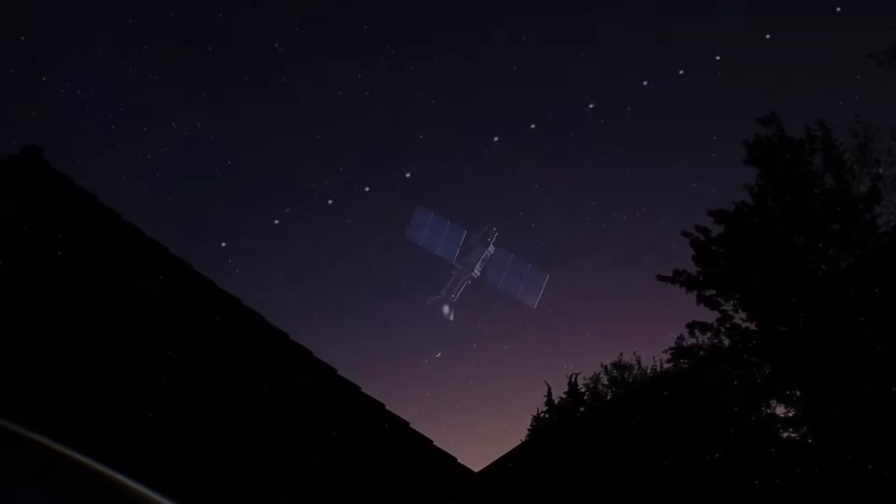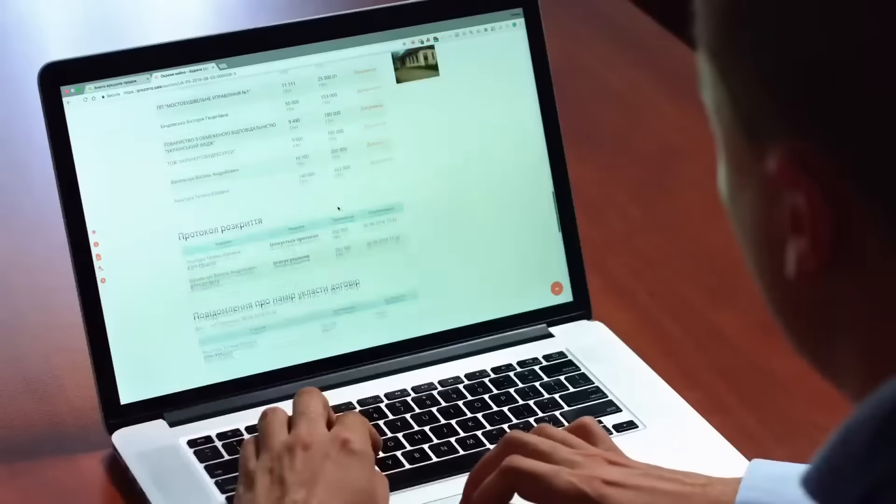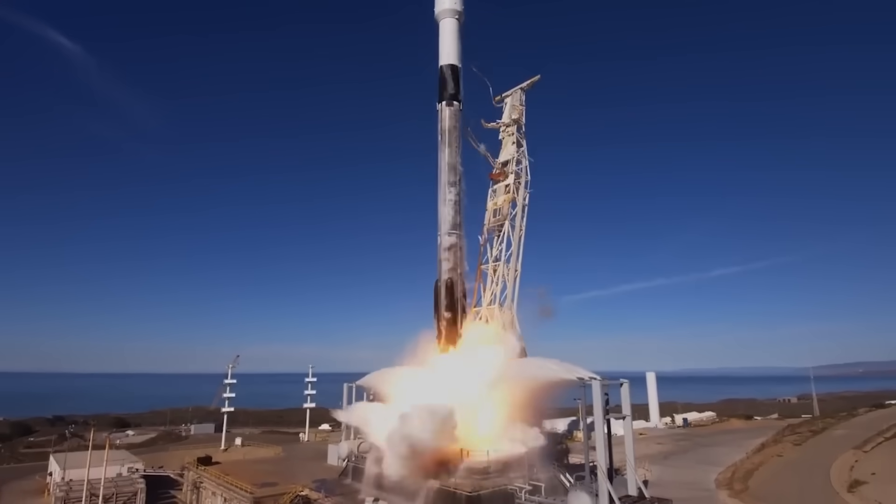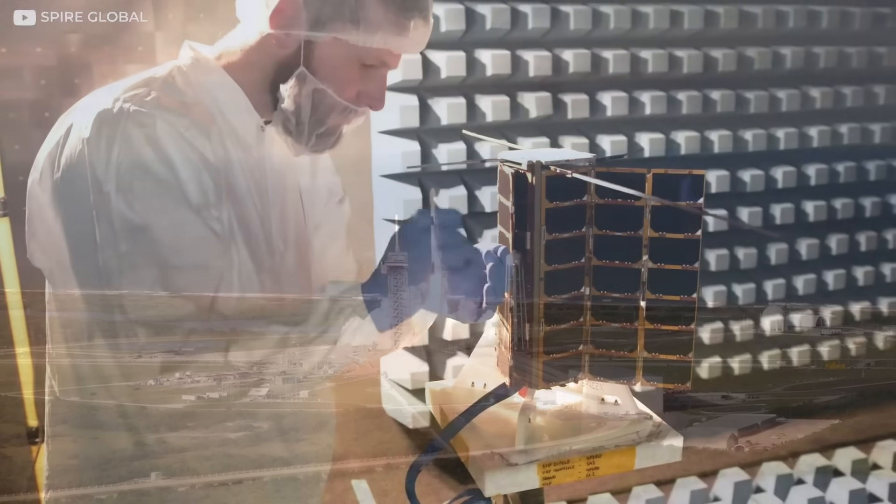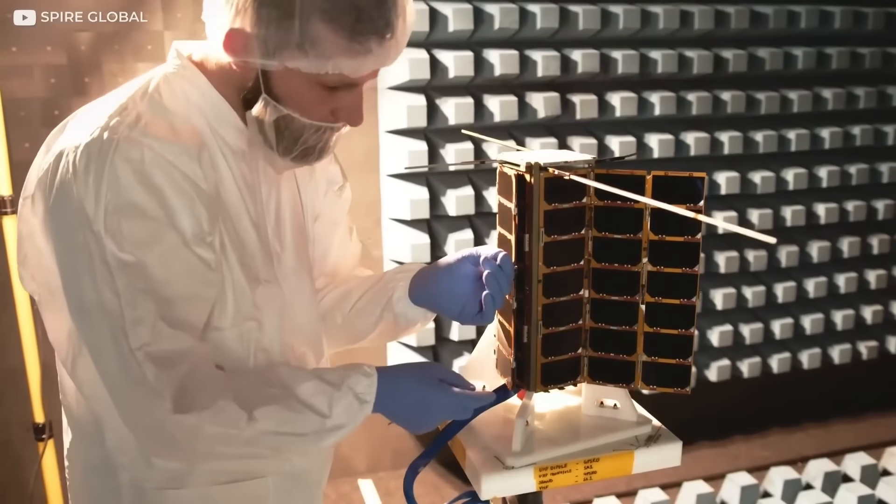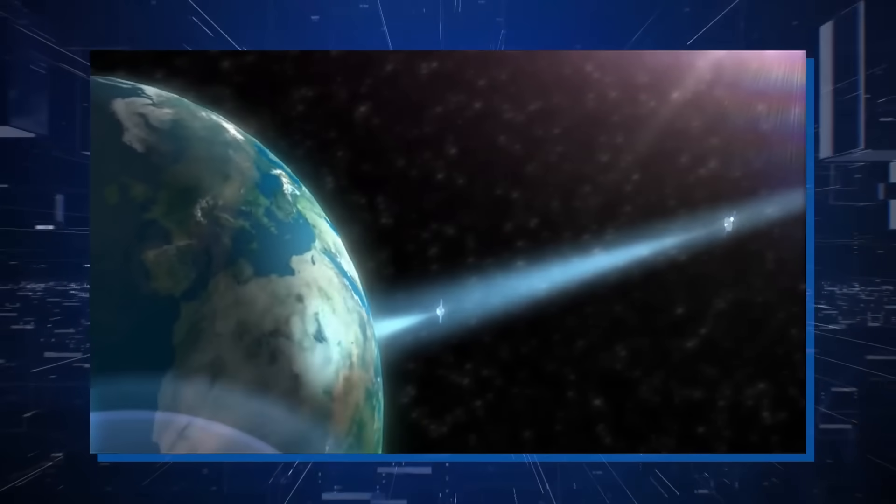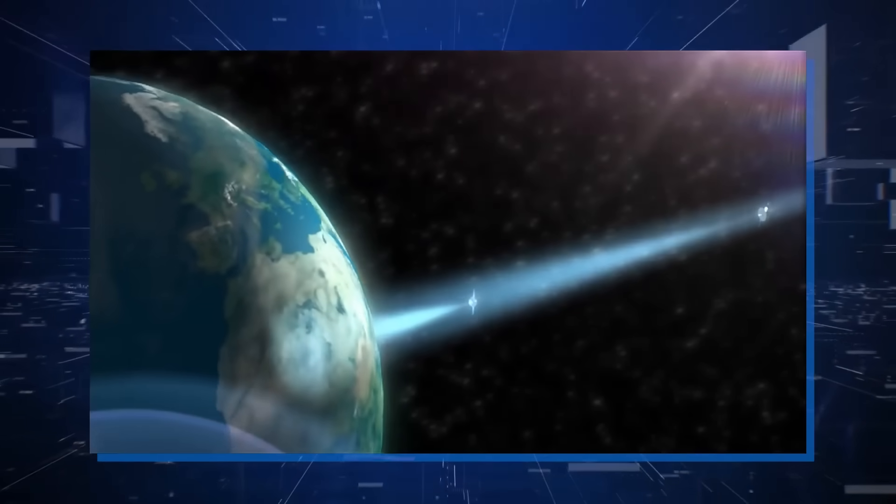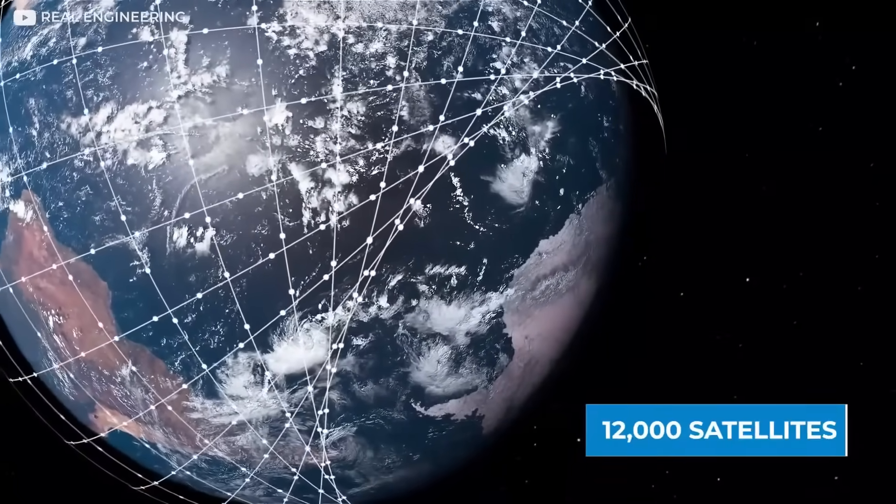Why is this happening? Each Starlink satellite is designed to last about five years. The first group of satellites went up in 2019, so it is expected that some are reaching the end of their life. However, most of the satellites that were removed had not reached five years yet. In fact, some were even from the newer second generation. This means something went wrong.